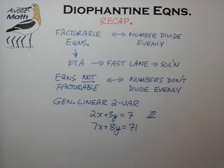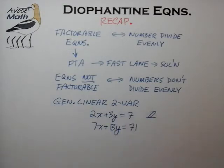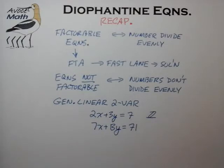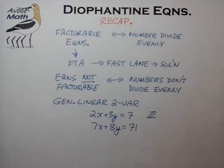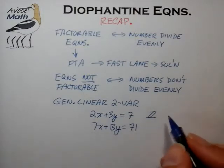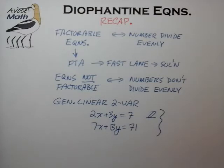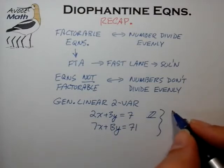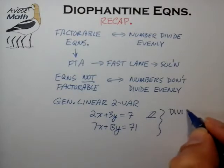Now it is true that you can construct some linear two-variable equations that are factorable, and we'll deal with those special cases in the following videos. But the general linear two-variable equation has coefficients which have really no common divisor, and there's really no way to group these items to form useful factor groups. So when we're dealing with these types of equations, we have to bear in mind that at some point in the solution we're going to get pulled into the whole notion of division remainders.